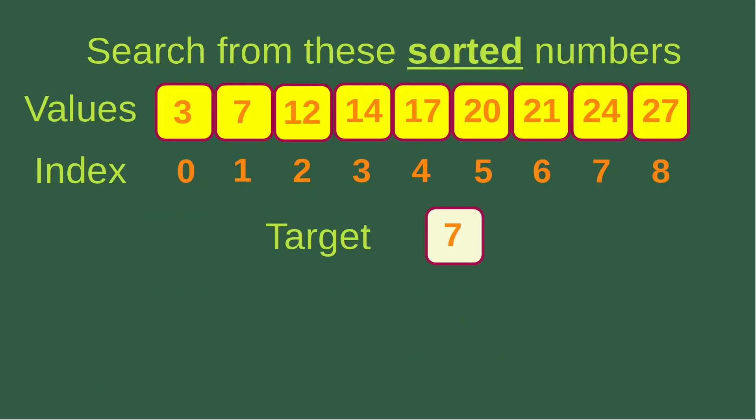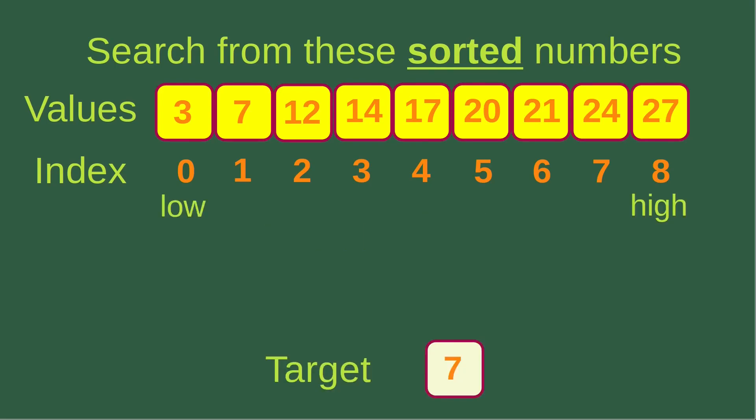Let us see an example of the ubiquitous binary search process. Suppose I want to search for number seven from these sorted numbers — there are nine numbers. First, I have to choose the low index and the high index as the far left and far right indices of the array. So the low index becomes zero and the high index becomes eight, since I have nine elements.